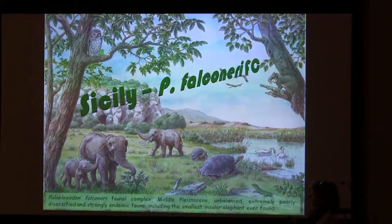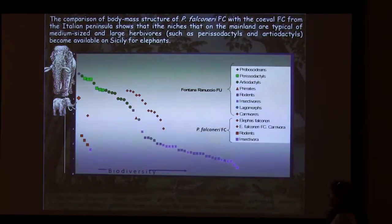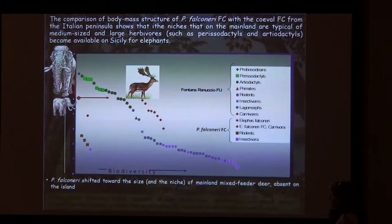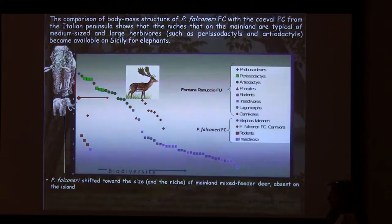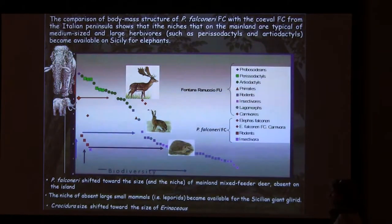For instance, comparing the structure of fauna in the Palaeoloxodon and Falconeri fauna complex from Sicily, you can see that the size of Palaeoloxodon and Falconeri shifts toward the size of male and mixed-feed deer that were absent on the island. The niche of large mammals like leporids became probably available for the giant Sicilian deer, while Palaeoloxodon size shifted toward the size of the missing ungulates.